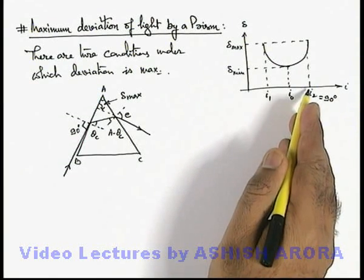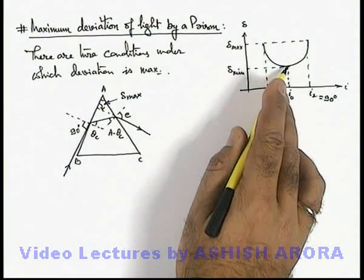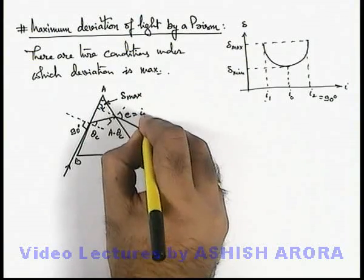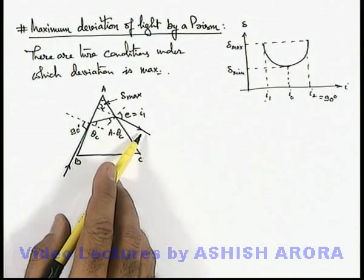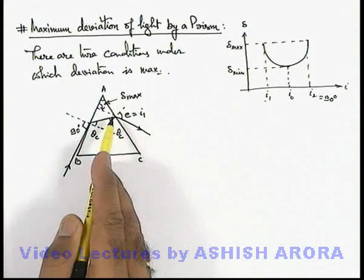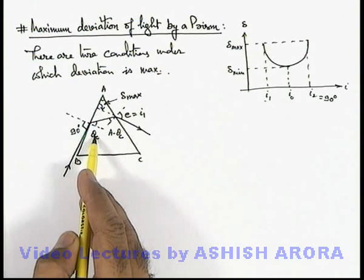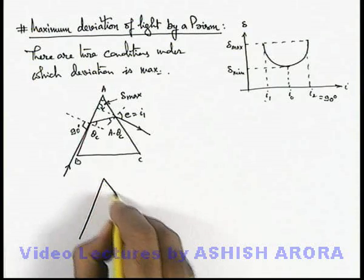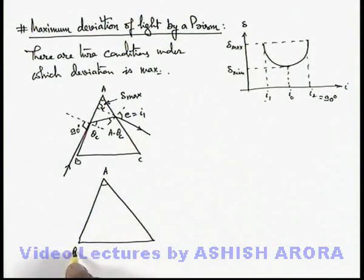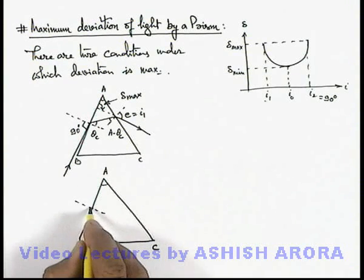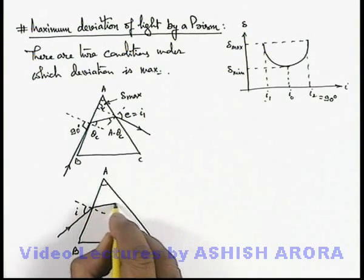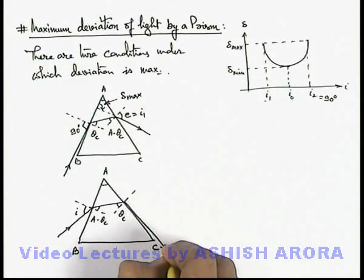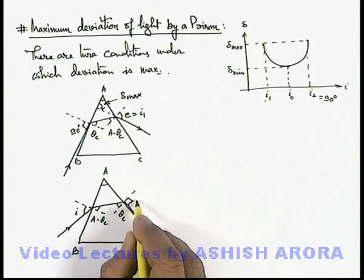Similarly, there should be an angle below i-not — the angle of incidence corresponding to minimum deviation — there should be an angle i₁ at which again the value of deviation should be the same. Here we can see this value e must be equal to i₁. According to the law of reversibility of light, if light is incident onto a surface at angle i₁, on the other surface it will be incident at an angle equal to the critical angle theta c, and it will finally graze along the other surface, and the deviation angle will remain the same. So if light is incident at angle i₁ such that on the other surface it is incident at angle theta c — for this it must be A minus theta c — and finally the light ray will be grazing out, or the emerging ray will be grazing along the surface, and here e will be equal to 90 degrees.